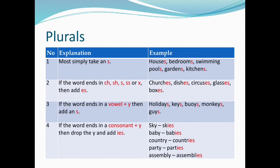4. If the word ends in a consonant plus Y, then drop the Y and add IES — sky/skies, baby/babies, country/countries, party/parties, assembly/assemblies.